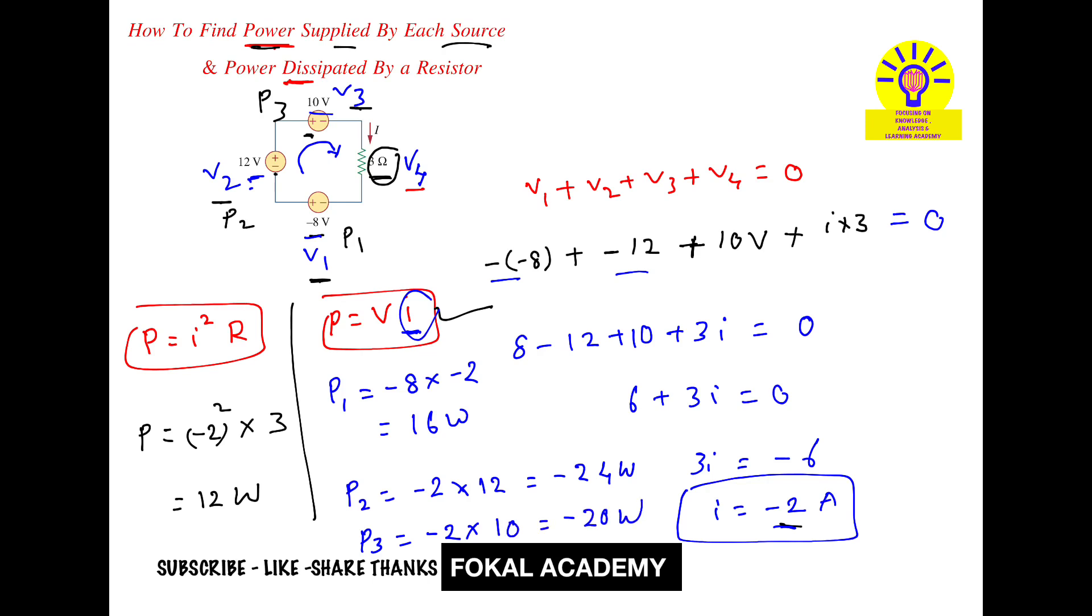These are the powers supplied by the sources, and this is the power dissipated in the resistor. This is the process of simplification. Thanks for watching, please subscribe, like, share, thanks.